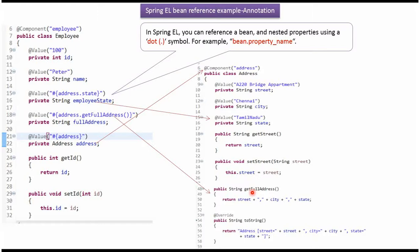The GetFullAddress method returns the concatenated value of Street, City, and State. Here I have overridden the ToString method. In the Address class, I have applied the Component annotation, and the name of the Address bean is Address.